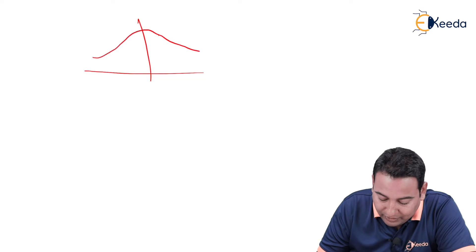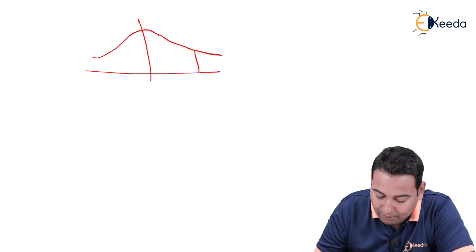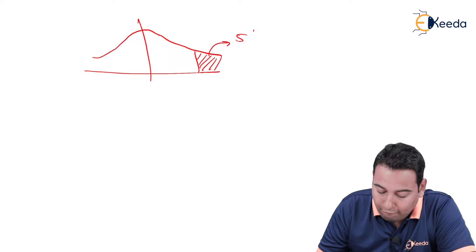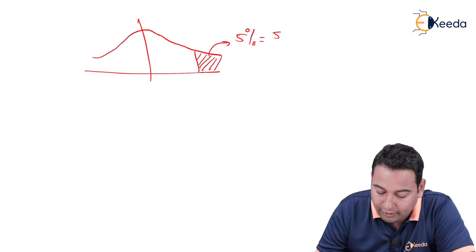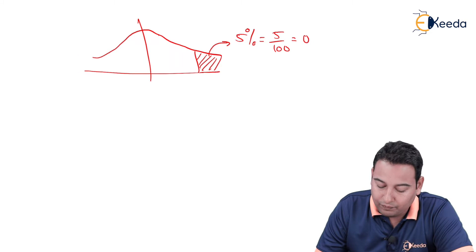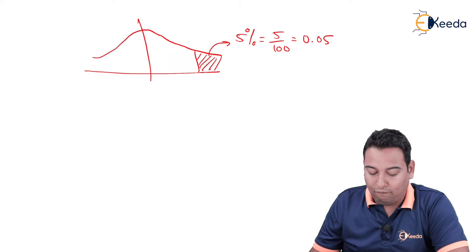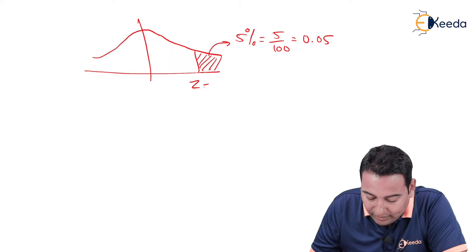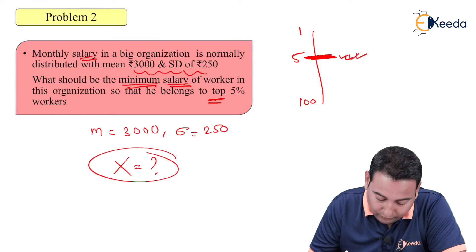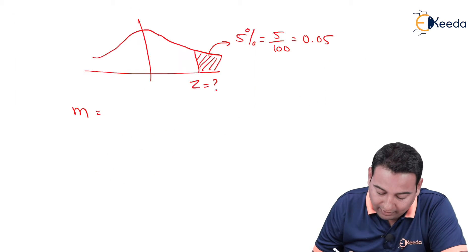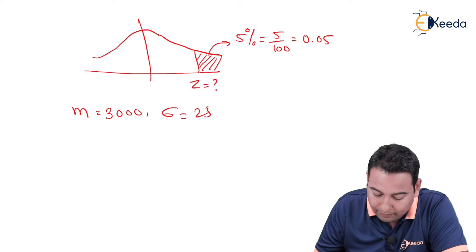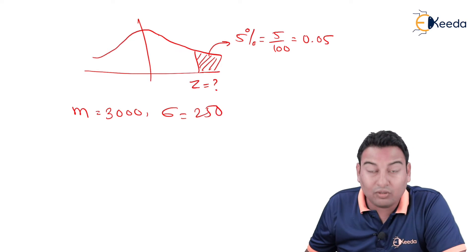Top 5%, that means we need to check 5% area from this side. 5%, 5% means 5 by 100, that is 0.05. My aim is to find the value of Z here. M we already have, this is m and this is sigma. M is 3000 and sigma is 250.